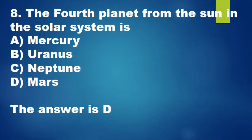Question 8: The fourth planet from the Sun in the solar system is: A. Mercury, B. Uranus, C. Neptune, D. Mars. The answer is D.